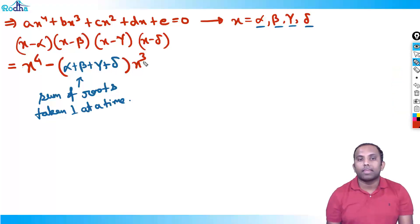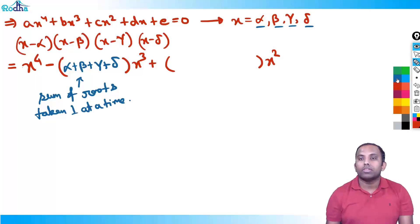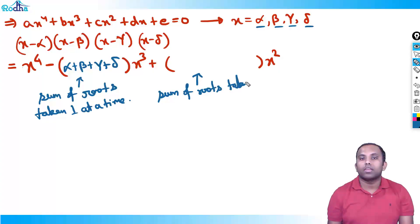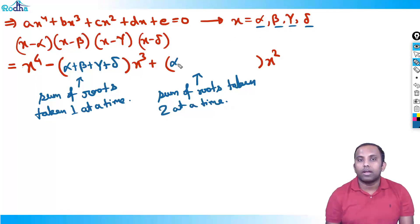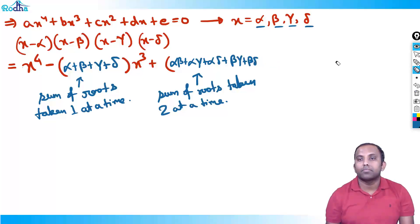After the minus sign comes a plus sign. After x³, x² comes — one more power decreases. The coefficient of the third term is always the sum of roots taken two at a time: αβ + αγ + αδ + βγ + βδ + γδ. That gives six pairs into x².